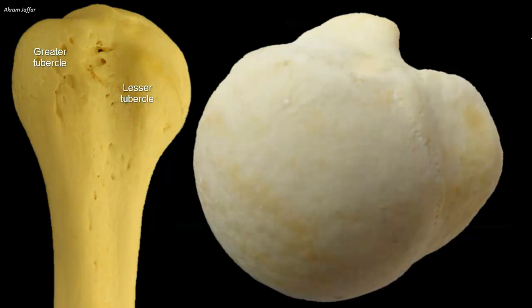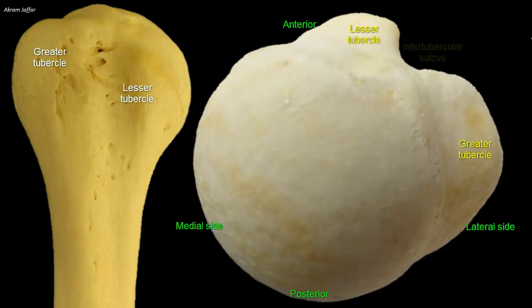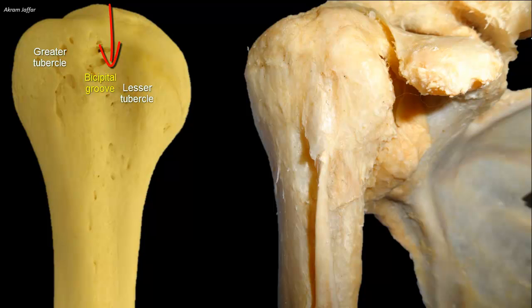The greater and lesser tubercles or tuberosities provide attachment to some scapulohumeral muscles. The greater tubercle is at the lateral margin of the humerus, whereas the lesser tubercle projects anteriorly from the bone. The intertubercular sulcus or bicipital groove separates the tubercles. It's called bicipital groove because it provides a protected passage for the slender tendon of the long head of biceps muscle.